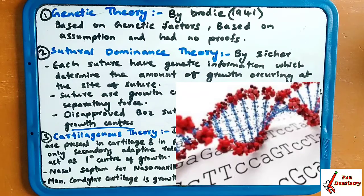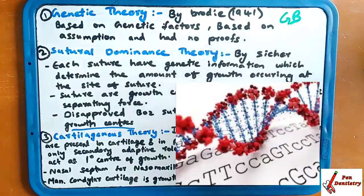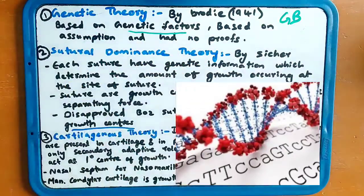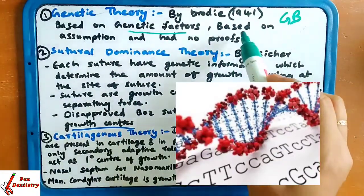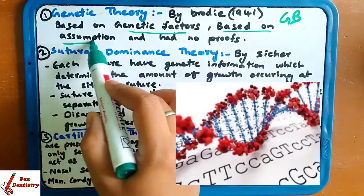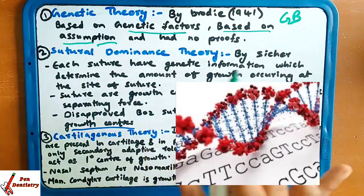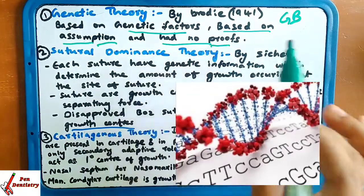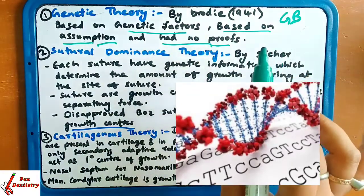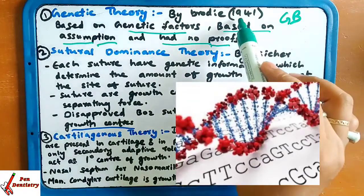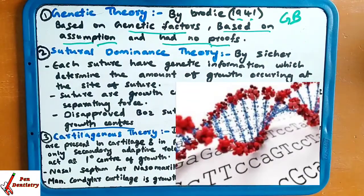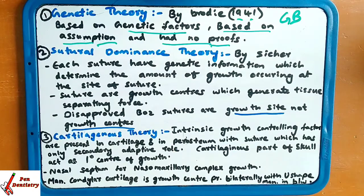The first theory is genetic theory, given by Brody — GB. It is based on genetic factors; the name itself tells you that. It was based on assumptions. Nowadays we do not consider this theory because it was not having proof. Brody was not having proof about this. It was given in 1941, but once you have to write or eliminate it in your exam.